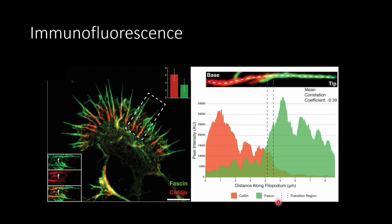When we fluorescently labeled these structures, we found that as we follow along filopodia — the bundled actin — we saw FASN, the actin bundling protein, up to a point. In green is FASN, in red is cofilin. As you follow along the filopodia, there's a very noticeable region where they're mutually exclusively binding. There were no regions where you see them binding together — always a transition zone between cofilactin and FASN, never mixed.